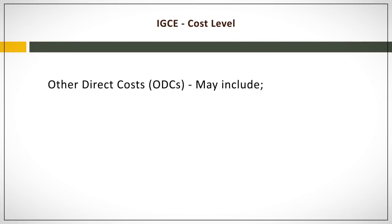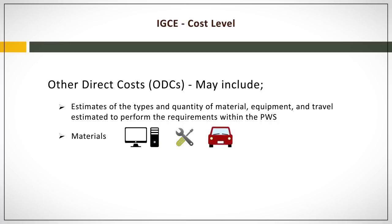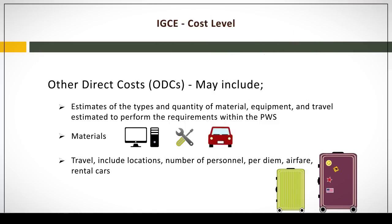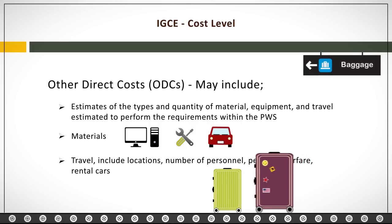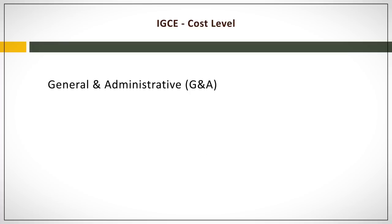The other direct cost, or ODC, category may include estimates of the types and quantity of material, equipment, and travel estimated to perform the requirements within the PWS. Materials used in direct support of the contract — such as computers, lease of equipment, and vehicles — may also be included within the ODC category. As stated earlier, the IGCE preparer must provide documentation on all estimates and how they were obtained. When considering travel, documentation must also be provided on the number of trips by location, number of personnel, per diem, airfare, rental cars, and so on.